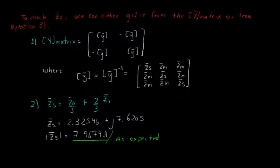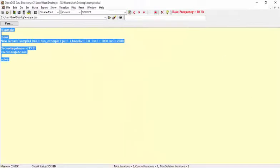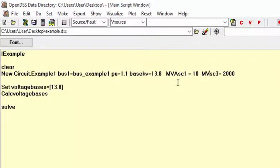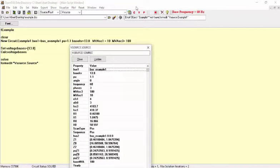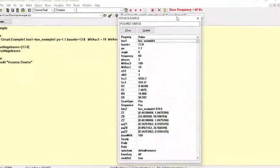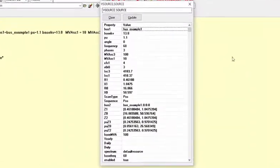We can also use MVASC3 and MVASC1 to define this element. Just for fun, if you type formEdit vSource.source, the table showing the information of this element will pop up automatically when you run the script. Checking the table, we can notice the same behavior as in the case that we have used ISC3 and ISC1. The default values for the ratios X1R1 and X0R0 are used. In this case, OpenDSS has done essentially the same process.